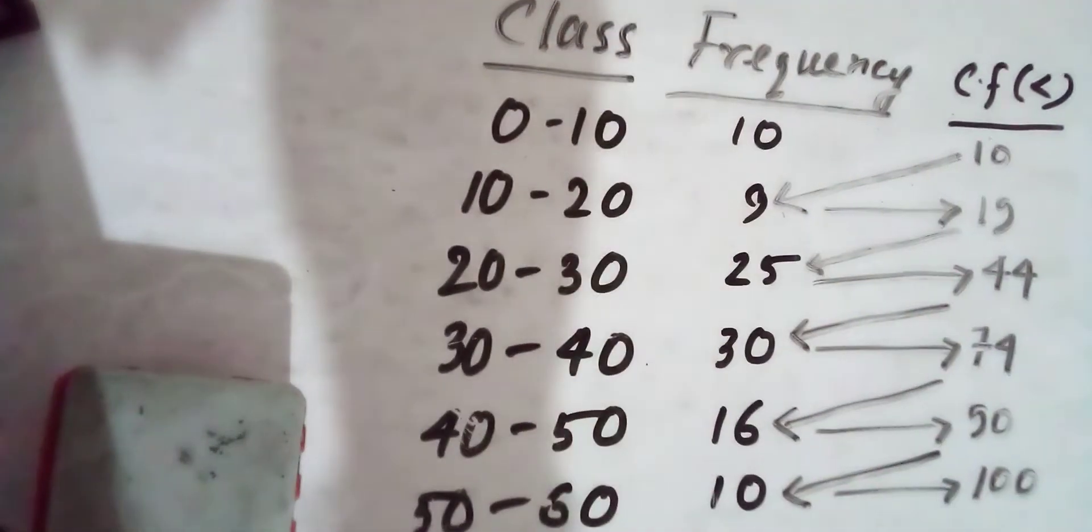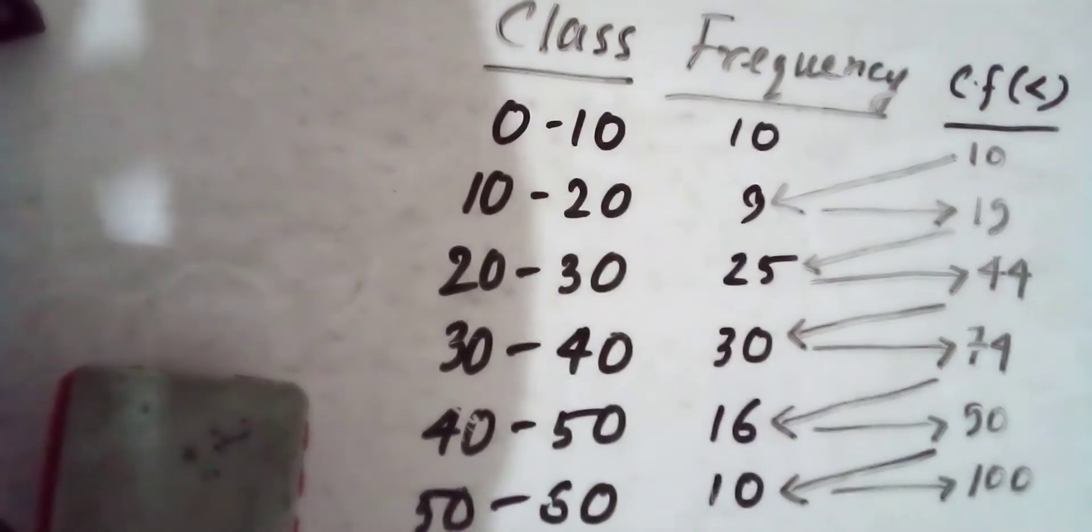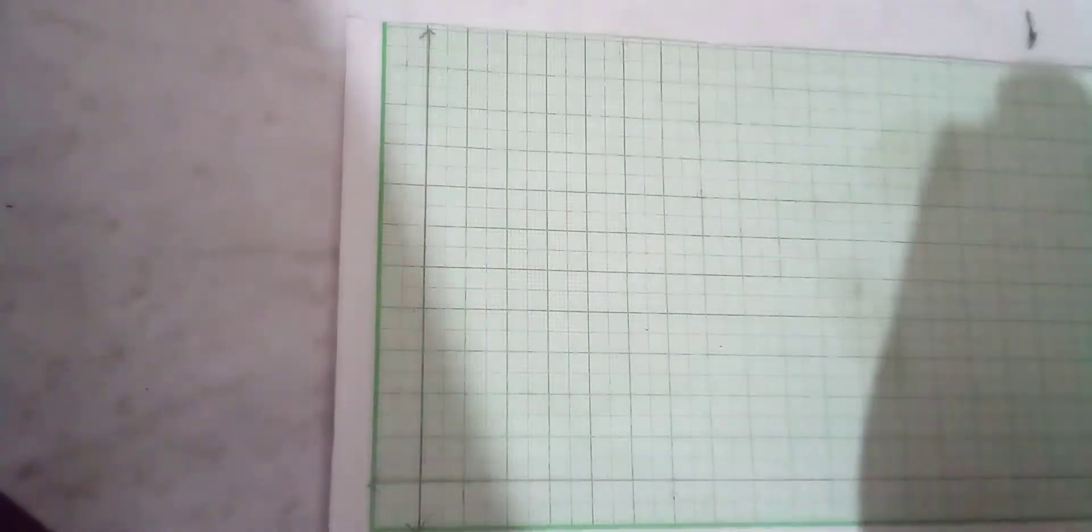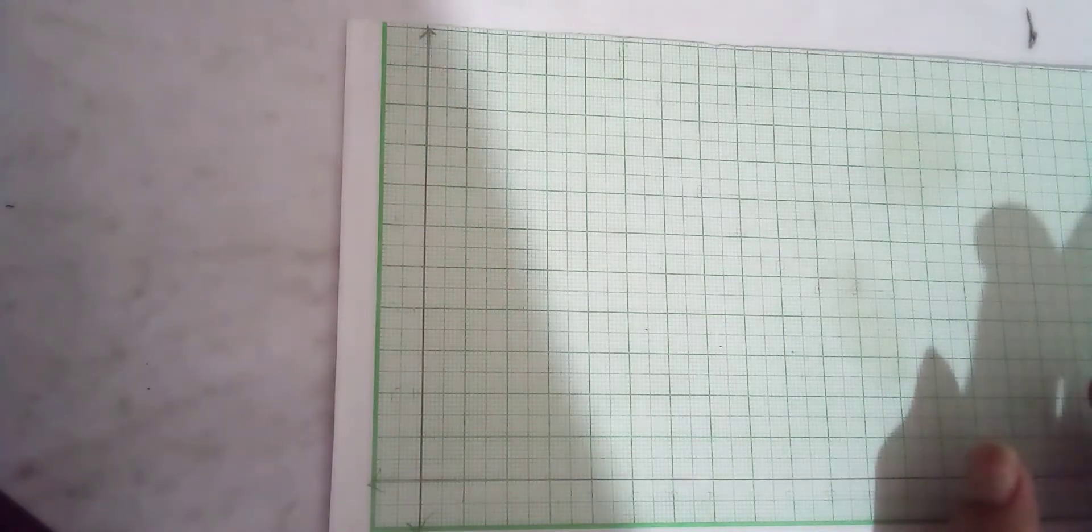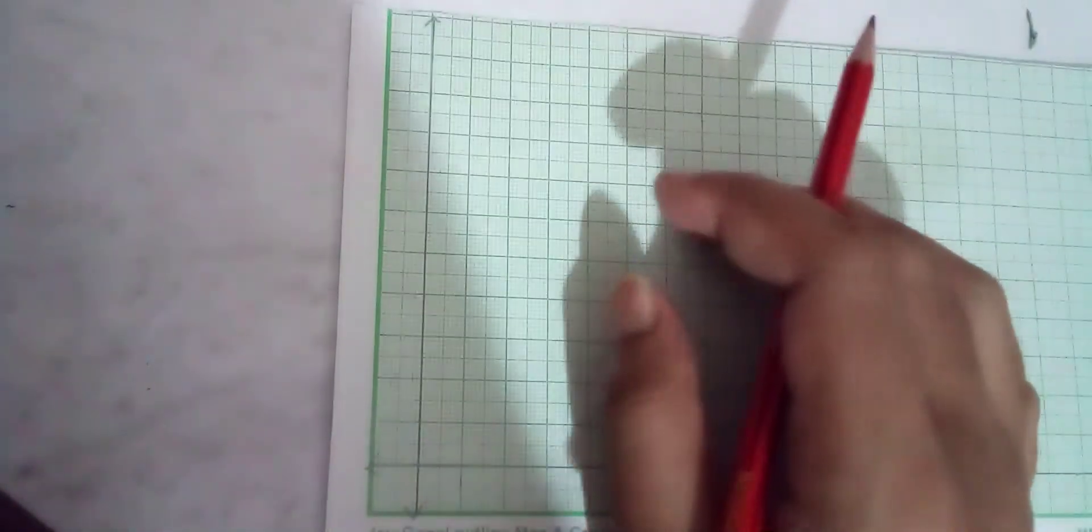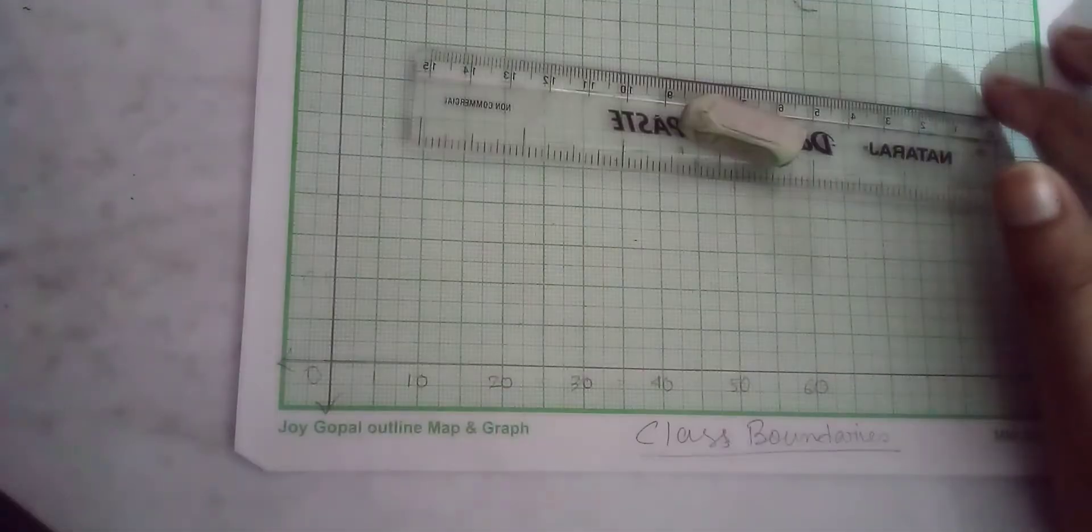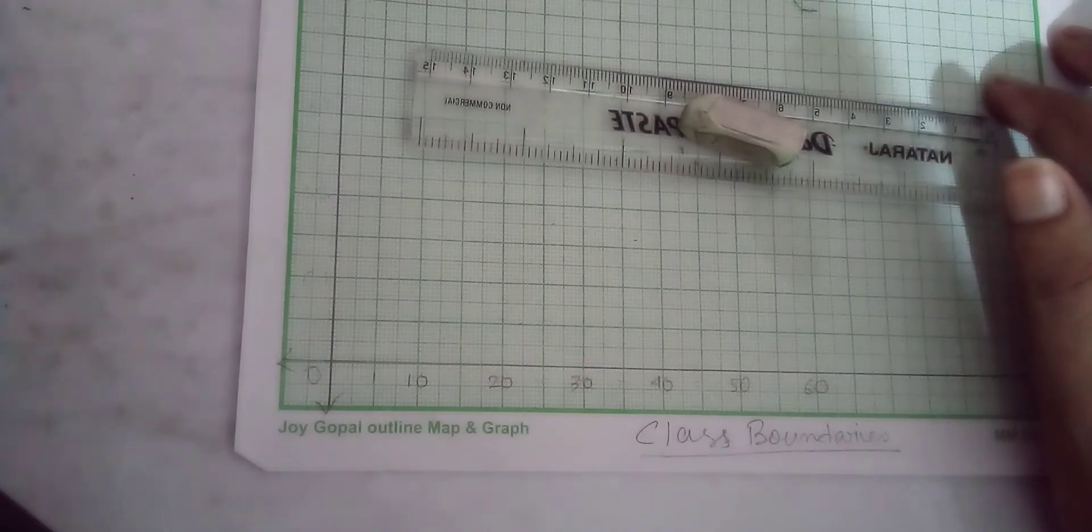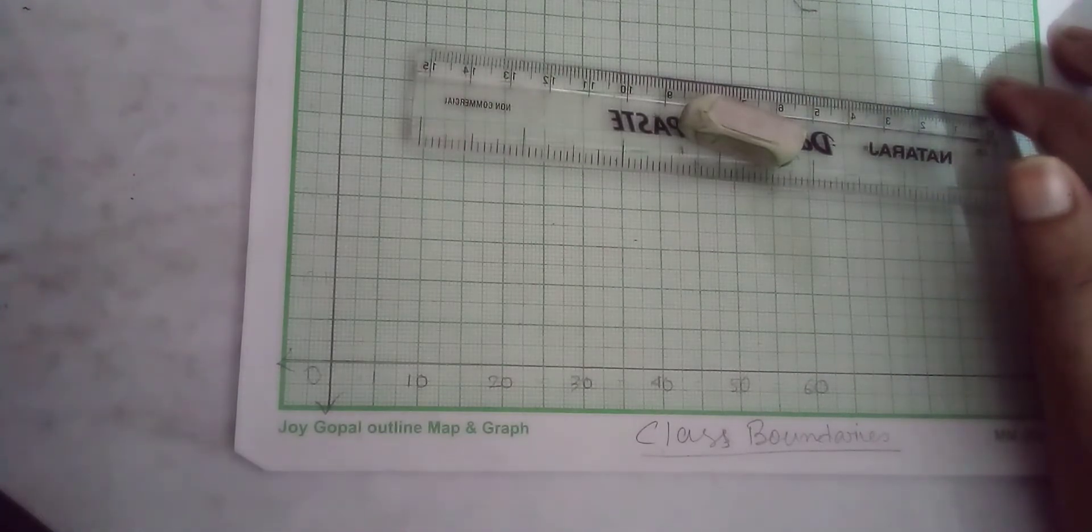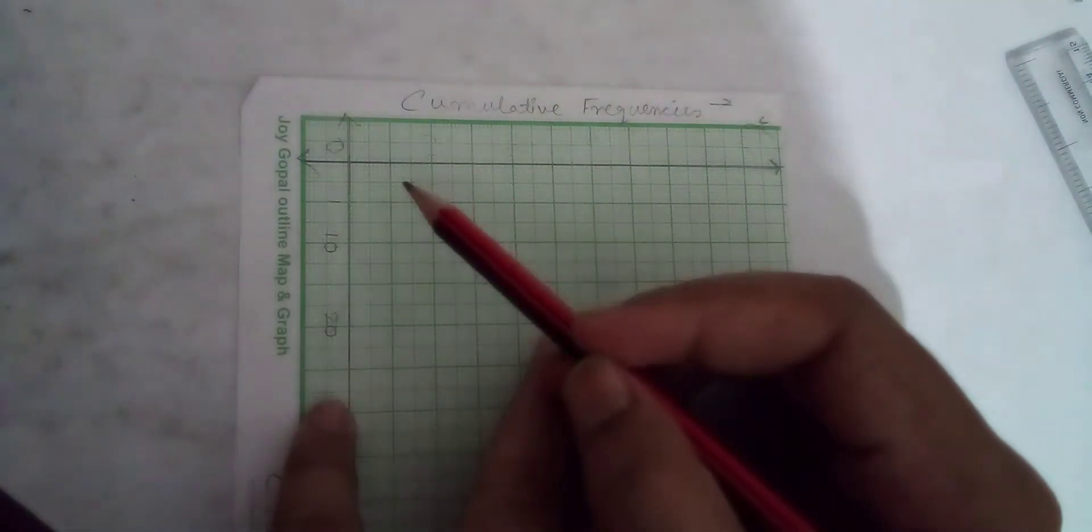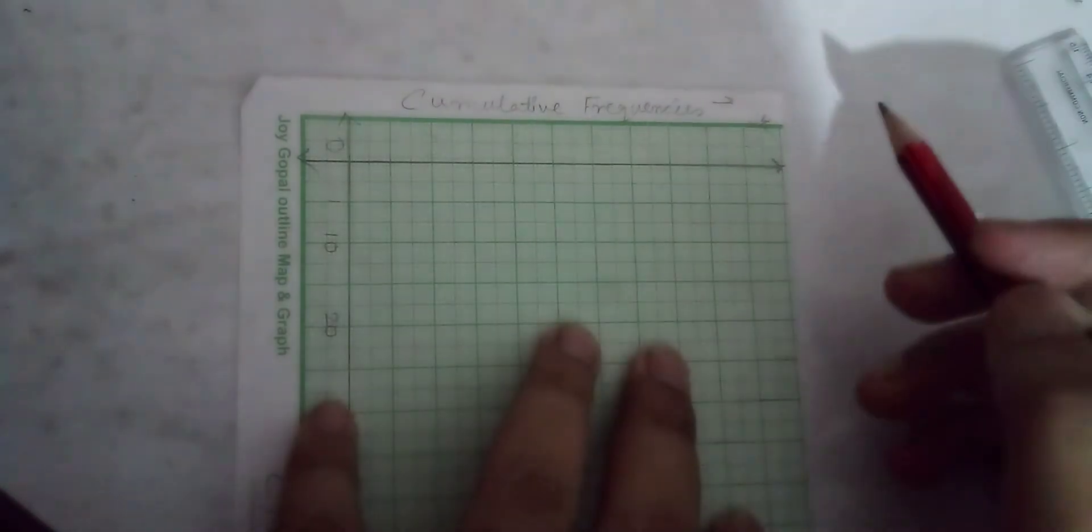Now we'll plot the cumulative frequency on graph paper. Along the x-axis, we'll place the class boundaries, with one small square equal to 10 units. Along the y-axis, we'll have the cumulative frequency, with one large square equal to 10 units.